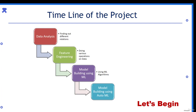Moving on, we will do model building using machine learning algorithms. I will show you which machine learning algorithm I will be using and how we will hyper-tune it. Then eventually at the last, we will shift to automated machine learning in which we will use the Auto-Sklearn library to do all the work we have done above in just a few lines of code. So at the end of this project, you will be able to learn all these things and implement them on your own.